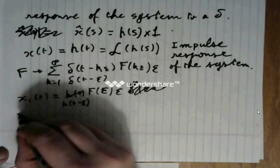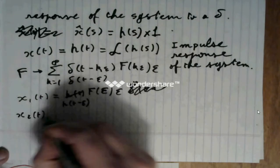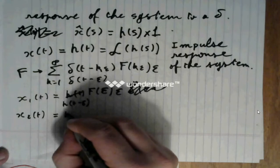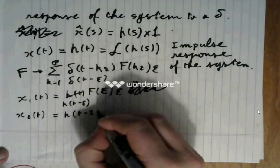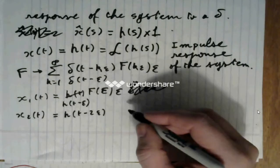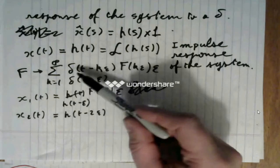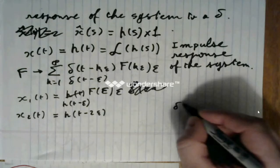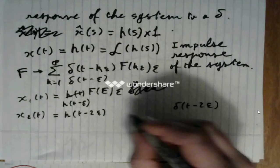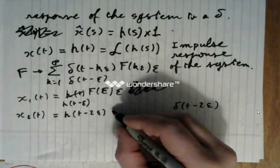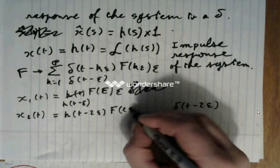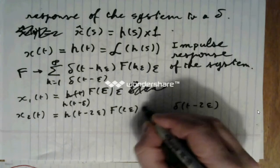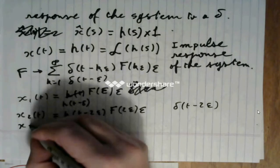Now, x2 of t will be h of t minus 2 epsilon, so, it's the response to the second component here, which is delta of t minus 2 epsilon, times f of 2 epsilon, times epsilon. Same for x3, et cetera.